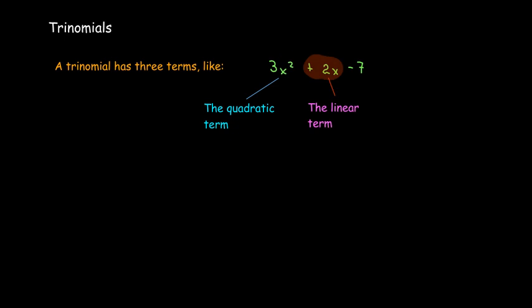Then there's going to be another term that has a variable but just raised to the power of 1 — that's our linear term. And then just a constant with no variable — that's our constant term. So three terms: a quadratic term, a linear term, and a constant term. Those are the trinomials we want to look at.